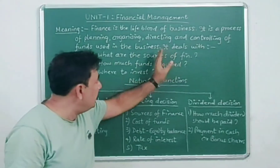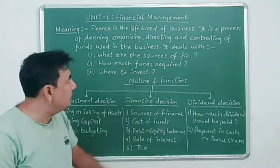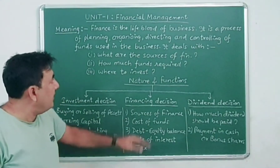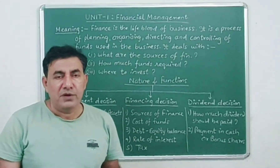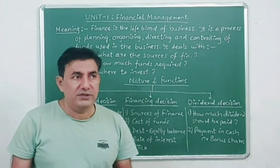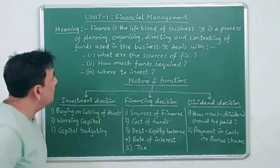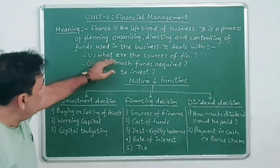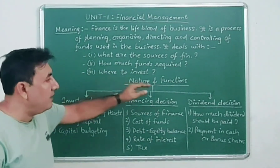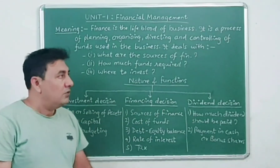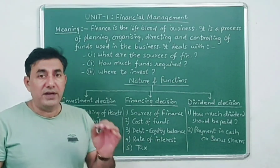In this definition, you can write the main management functions. What do we do in financial management? Basically, these 3 points are important: What are the sources of finance? How much funds are required? And where to invest the finance? These are the 3 major questions of financial management.